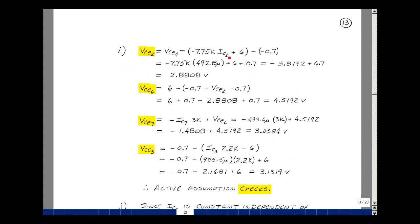Evaluating the equations: VCE for transistors 2 and 4 with IC2 of 492.8 microamps gives 2.8808 volts — much greater than a few hundred millivolts. For transistor 6, the calculation yields 4.5192 volts. For transistor 7, using IC7 of 493.6 microamps and adding VCE6, we get 3.0384 volts — again much greater. For transistor 3, using IC3 of 985.5 microamps, VCE3 equals 3.1319 volts. All base currents are positive and small, and all collector-emitter voltages far exceed a couple hundred millivolts, confirming we're in the active region.